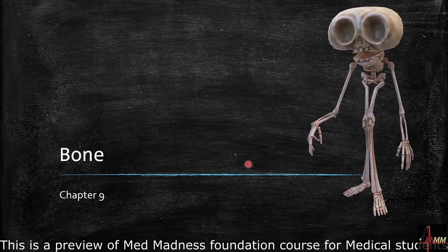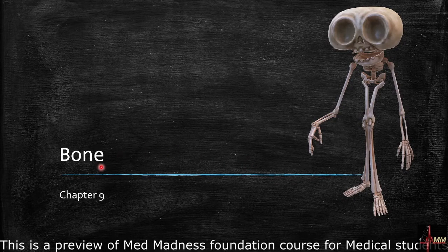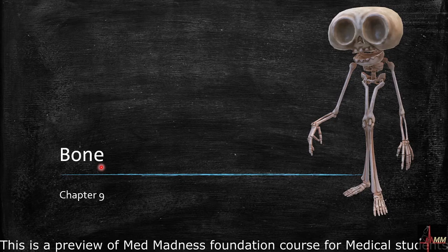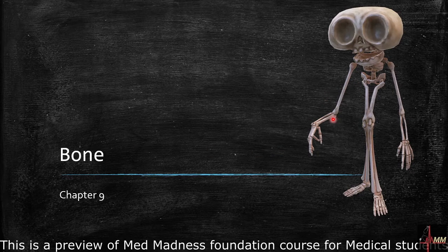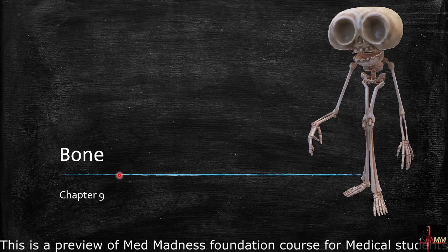Welcome to chapter 9. In this chapter we are going to see the different types of cells present in the bones, the types of bones in the body, the compact and spongy bone and their structure. At the end of the session you will be able to clearly understand bones, and this will be the foundation for studying subjects like pathology, orthopedics, and others.